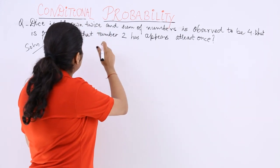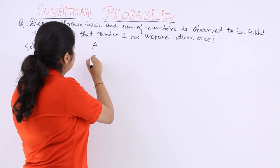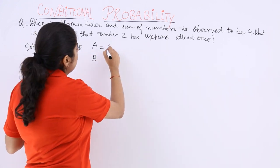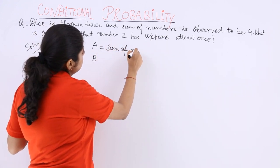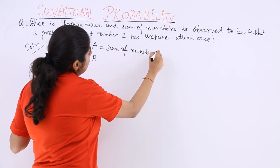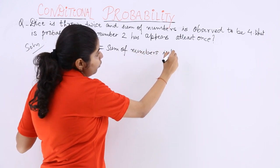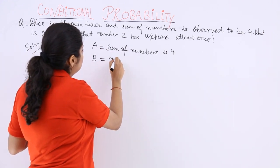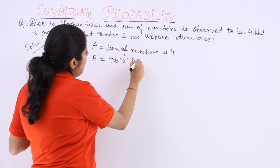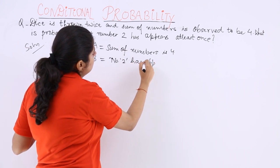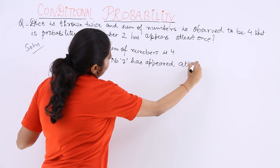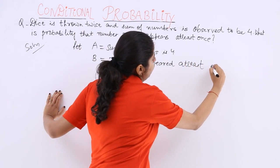Now let A and B be two different events. Let A denote sum of numbers is observed to be four. And let B be an event which shows the number two has appeared at least once.